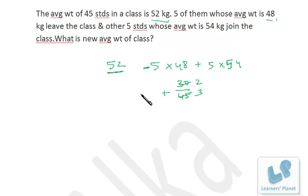This is the initial average. That is the loss when 5 students with weight 48 are leaving. This is the gain when 5 students with weight 54 are coming.